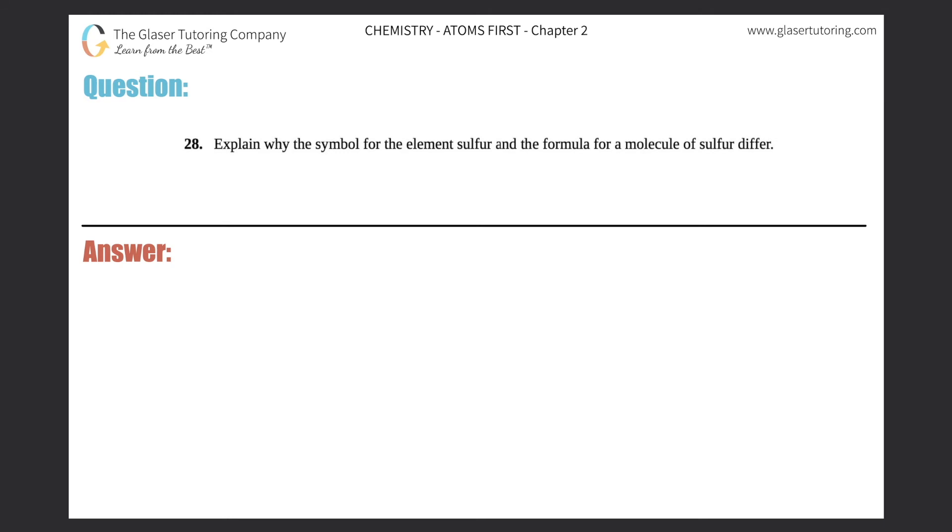Number 28: Explain why the symbol for the element sulfur and the formula for a molecule of sulfur differ. Alright, so we just did literally the same exact question for number 27 but instead of sulfur they put oxygen. So this is basically going to be the same thing but just a tiny bit different.